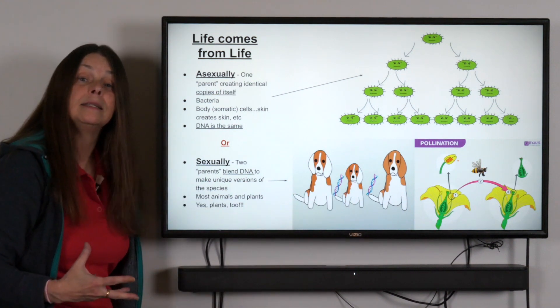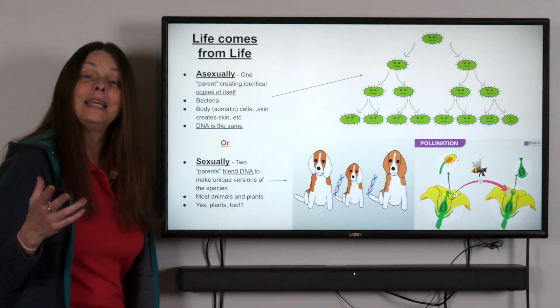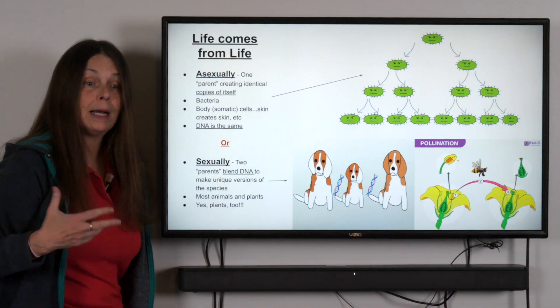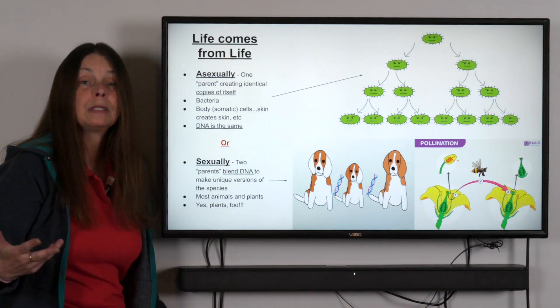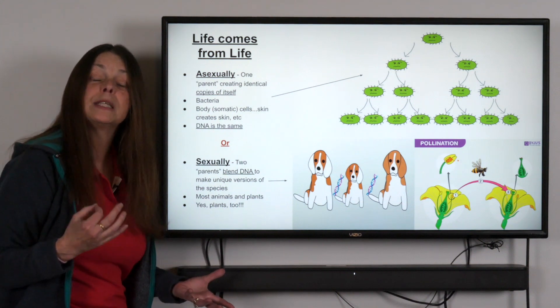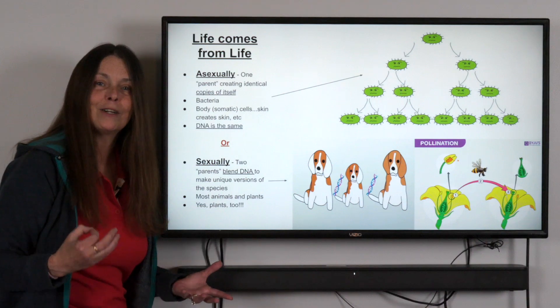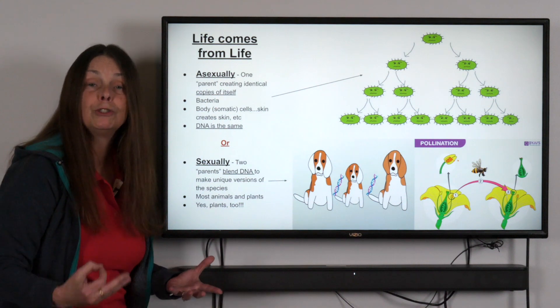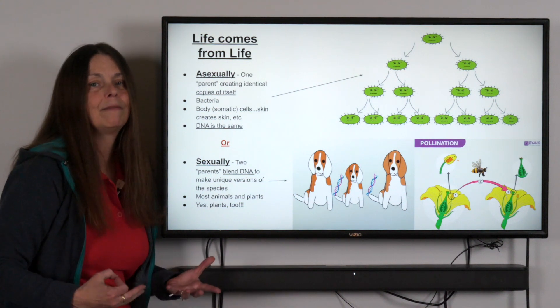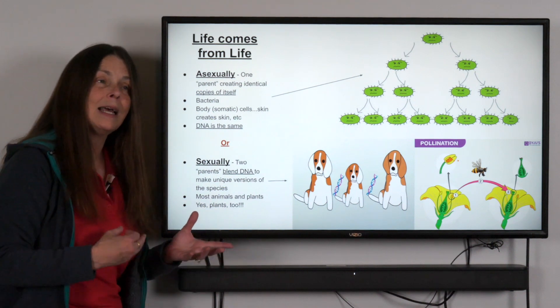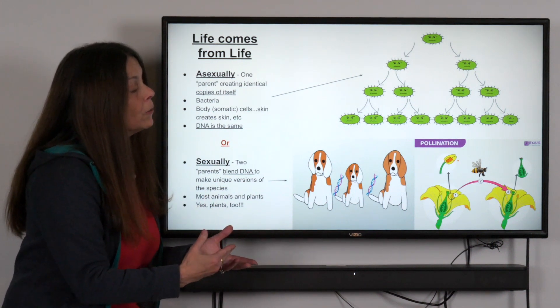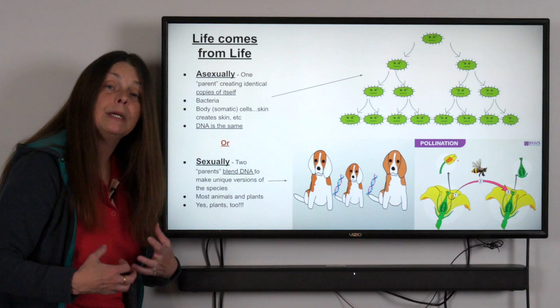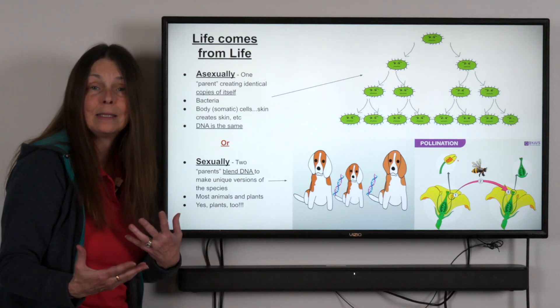Take for example even the unfortunate situation we're in right now with COVID. You'll find that some people are naturally more resistant to this particular virus than others. That's an advantage for the species. In other words, if some of us are strong enough to survive this virus, that would mean that we would probably have children who have those same traits that will survive that virus. The differences among us in many ways strengthen our species or strengthen any species that is reproducing sexually, because there's going to be so many variations of what that species might have for strengths and weaknesses.